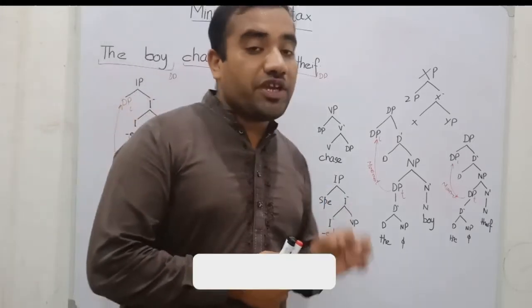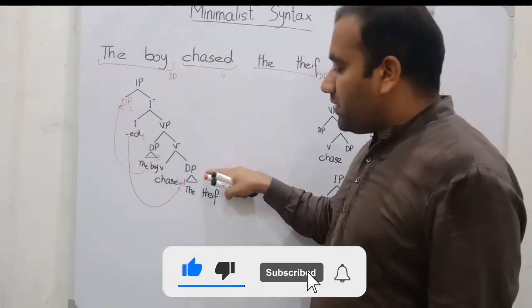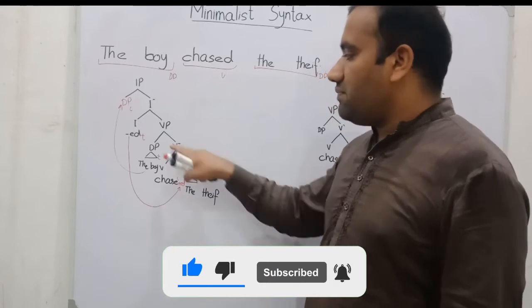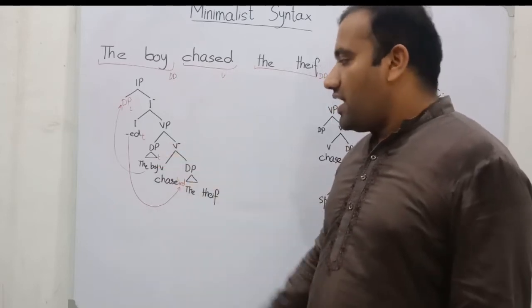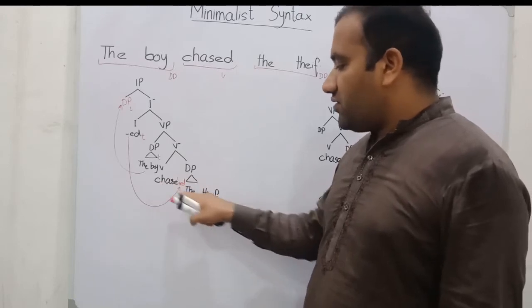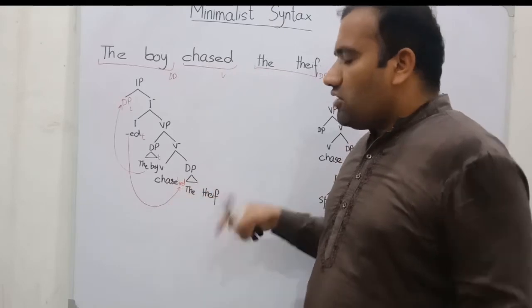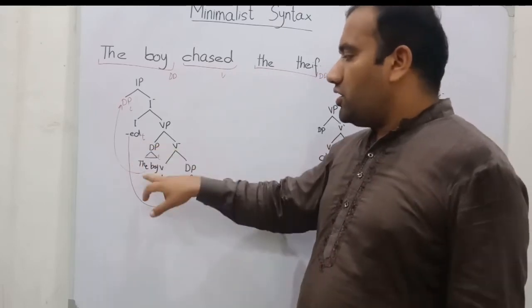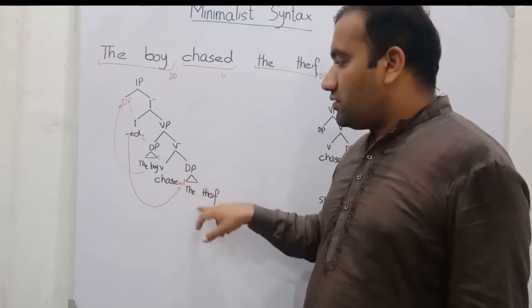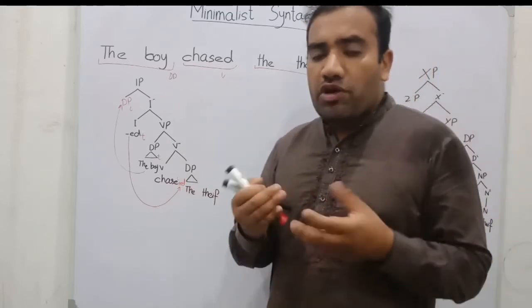Let's move to how we can make a sentence. We have already made the DP the thief, and we have already made the DP the boy, and we have already made the chase, chase the thief, the boy chase the thief. If we say ED, the boy chase the thief, it will be the wrong sentence.